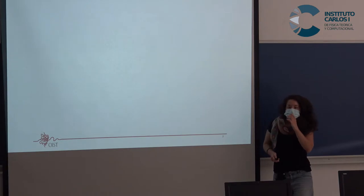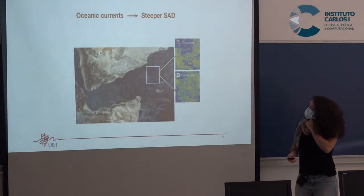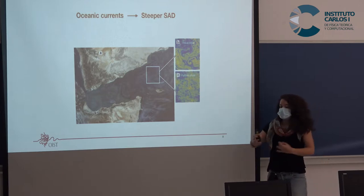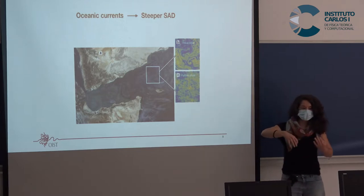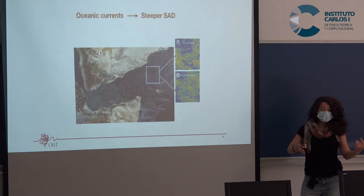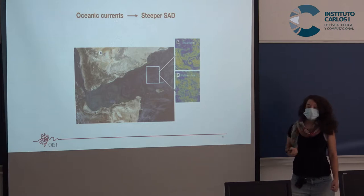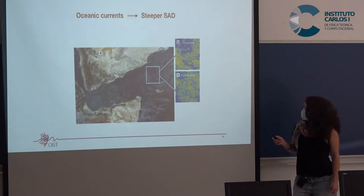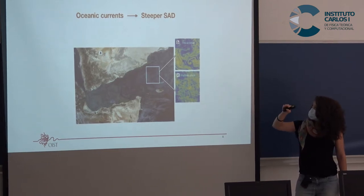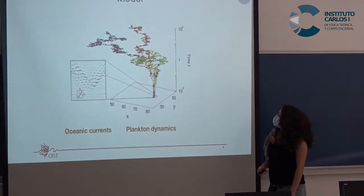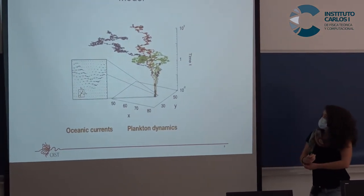Our hypothesis is that oceanic currents, due to their specific structures like chaotic advection and the barriers they create, will affect diversity, causing the species abundance distribution to be steeper. From this, we propose a model.